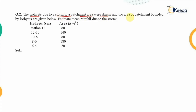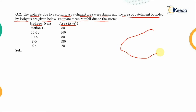Moving on to the second problem: iso-heights due to a storm in a catchment area were drawn, and the areas bounded by the iso-heights are given. We need to estimate the mean rainfall due to this storm. Since the data is given in terms of iso-heights, we will use the isohyetal method. If no method is specified, we would use the simplest arithmetic mean method.